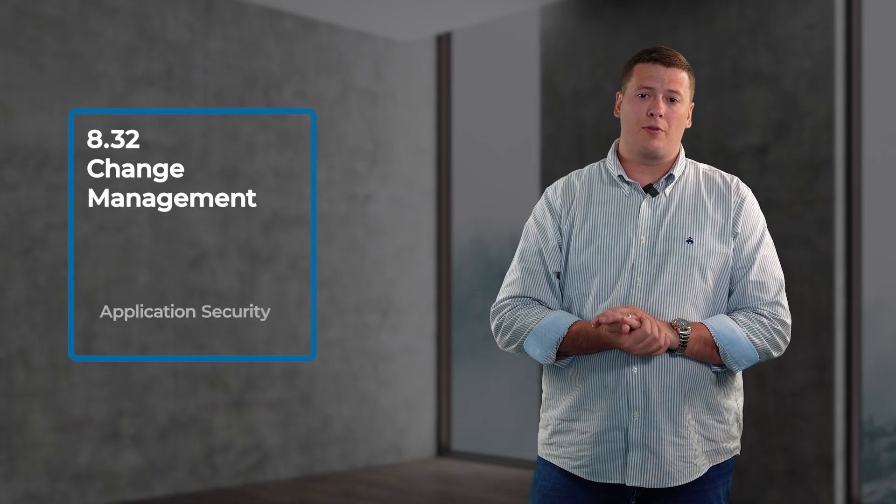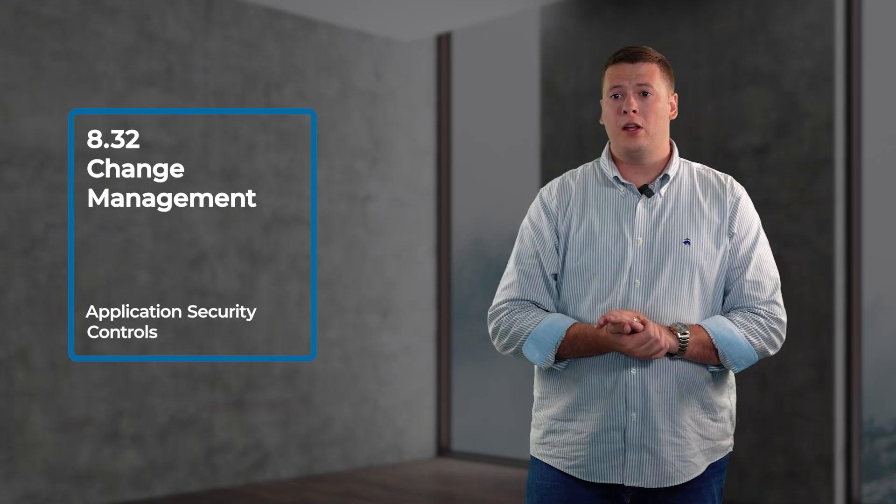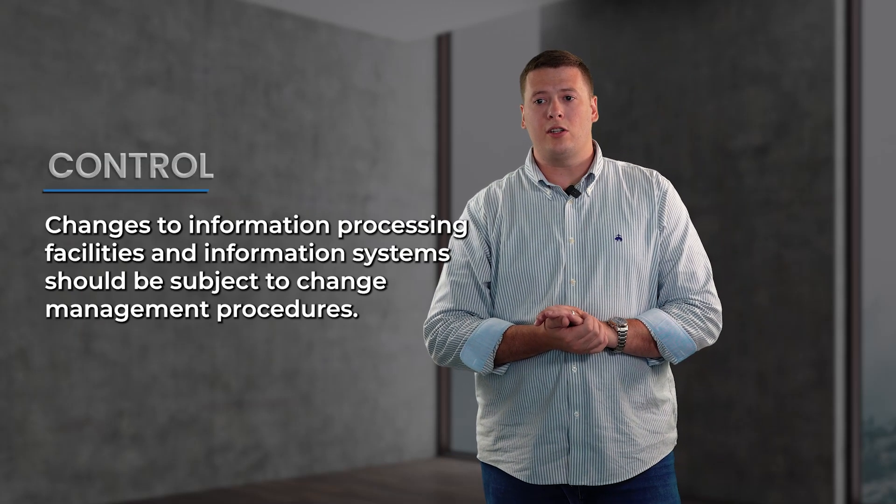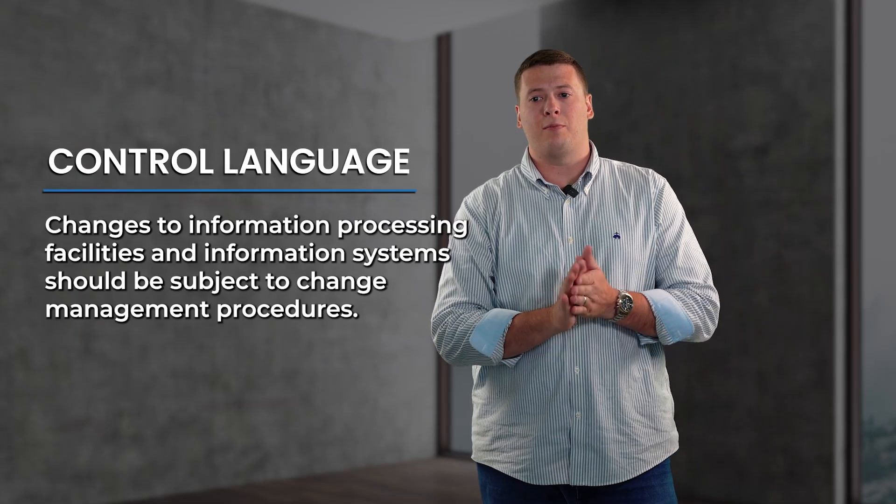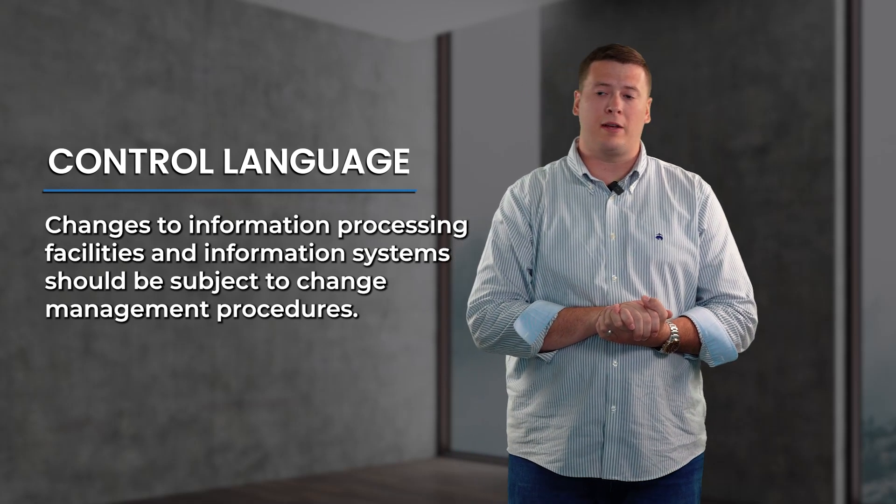The last one is 8.32, change management. Change management states that changes to information processing facilities and information systems should be subject to change management procedures. These might be a change advisory board, or a simple process in a ticketing system — it could be all kinds of things. Essentially, what you want to be able to show is that you have a controlled change management process that's being consistently followed by the team as they introduce any types of changes to the in-scope environment.